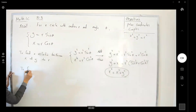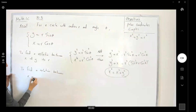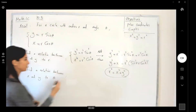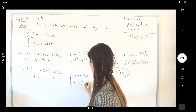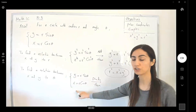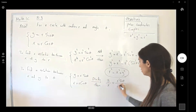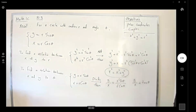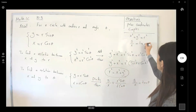The first relation is: x squared plus y squared equals r squared. Now to find a relation between x, y and theta, I divide the two equations. y over x equals r sine theta divided by r cosine theta. The r's cancel, leaving y over x equals tangent theta. So y divided by x is nothing but tangent theta — a relation between y, x, and theta.